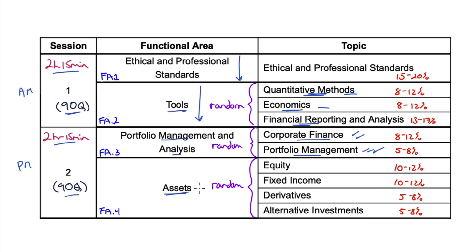When you get to the asset classes — equity, fixed income, derivatives, and alternatives — all four will be grouped together and randomized within that functional area. So you might get equity followed by alternatives, followed by fixed income, derivatives, equity, and so on. So it is randomized, but not completely — they're randomized within their functional areas.